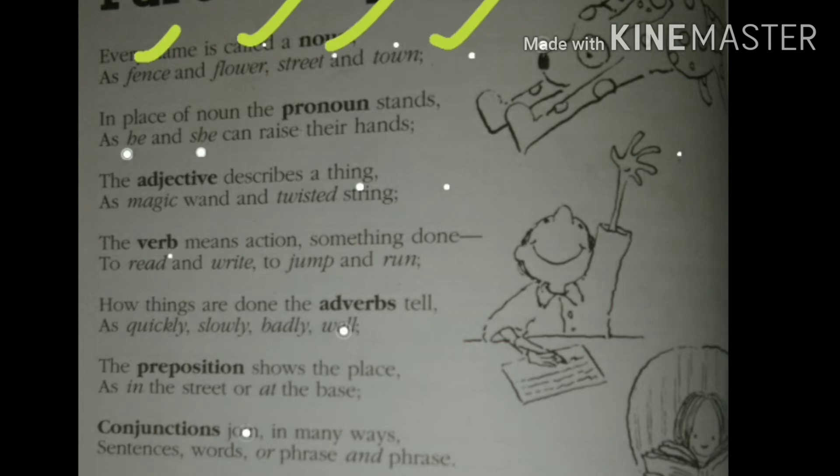As we see any object, a chair, a table, a refrigerator, whatever you see, you call it by its name. And this common name is called a noun. Now move on to the second one in the row, that is pronoun.